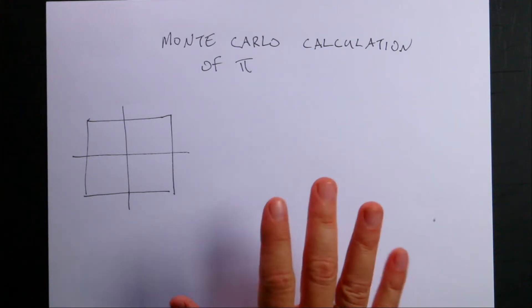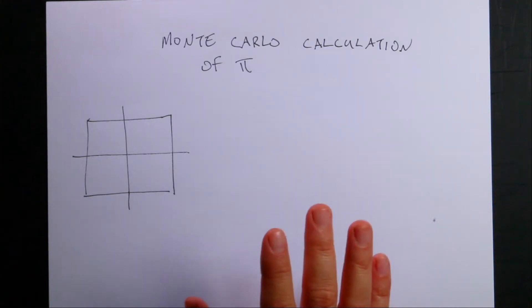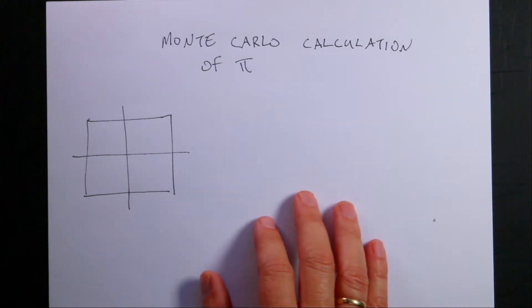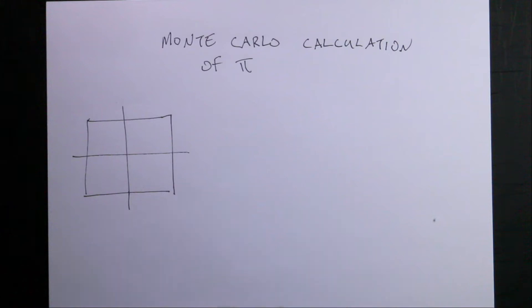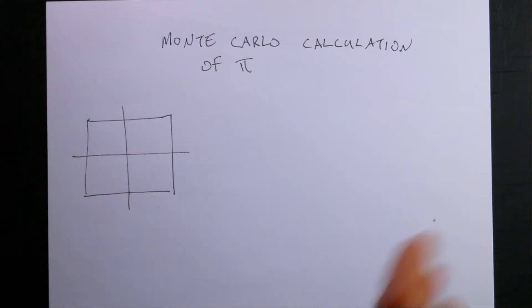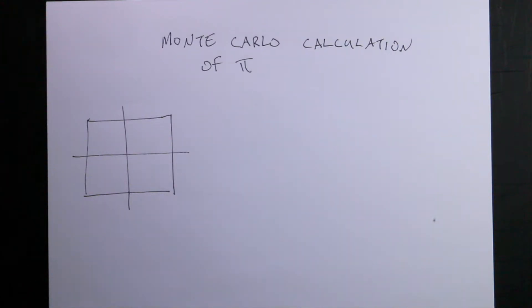I'm going to show you an example of using random numbers to calculate pi, and then after that, the next thing I'm going to do is show you how to use random numbers to calculate moments of inertia for different shapes, and it's going to be super great.